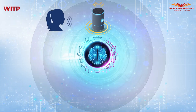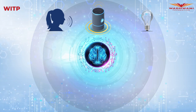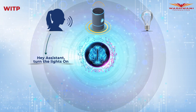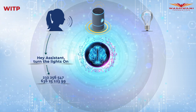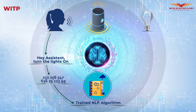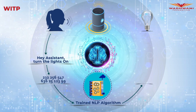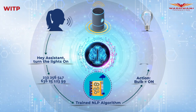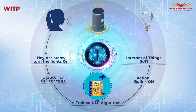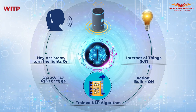Voice assistants are a blend of multiple emerging technologies. When a human says 'Hey assistant, turn the lights on,' through speech recognition the spoken words get converted to text. The text is then converted to numbers that the system understands. The numbers go through a set of trained NLP algorithms, which generate an action message. That action message is conveyed to the light bulb using Internet of Things, or IoT, and finally the bulb is turned on — all in a fraction of a second.